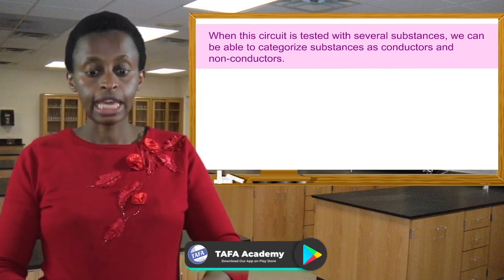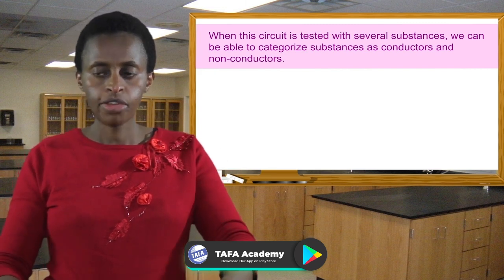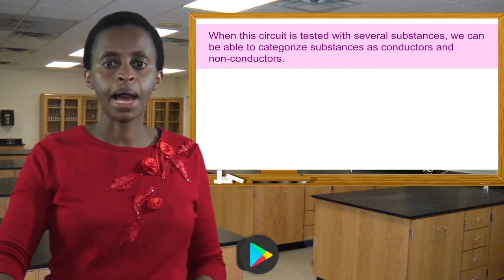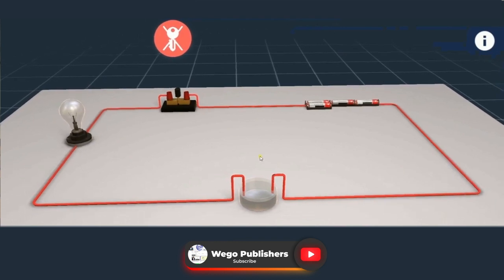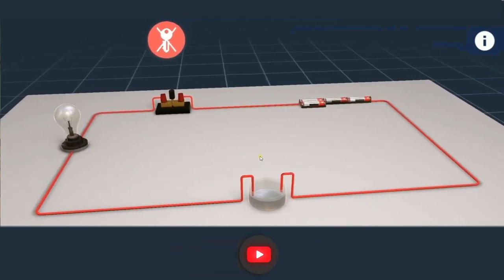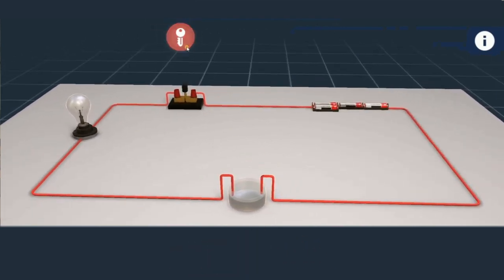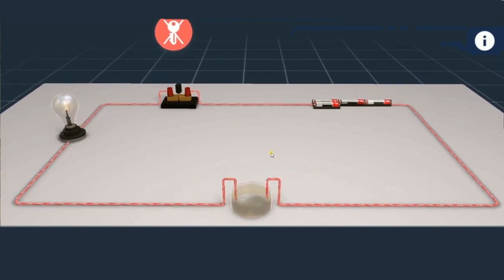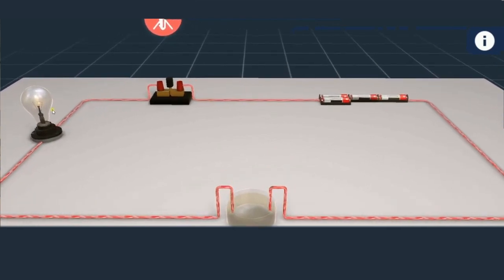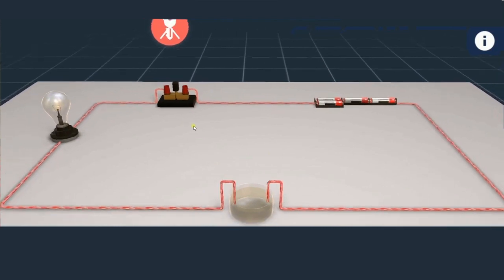In front of us here we have a simple circuit, and it is made up of cells. We have the wires and we have the bulb. The bulb will always confirm to us that the circuit is complete. So what we are going to do is just to demonstrate with this. Then we are going to have different items just to show if they can conduct electricity or not, whether they can conduct electric current or not.